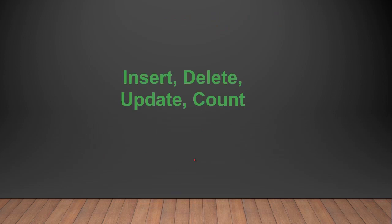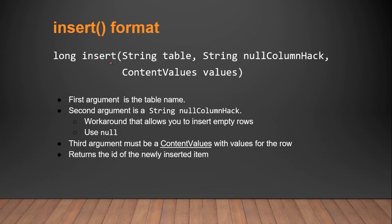Now let's learn how to insert, delete, update, and count data returned from the query method. The insert method inserts data to the database table and returns the ID of the newly inserted row. First specify the table name. The null column hack parameter allows you to insert null data to a specified column — if you don't want to insert null data, pass null. Then pass the ContentValues object, which stores your data as key-value pairs mapping column names to data values.